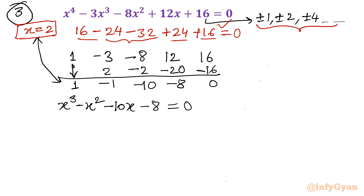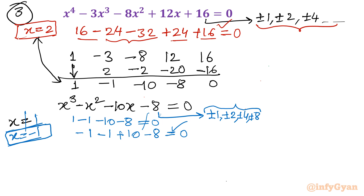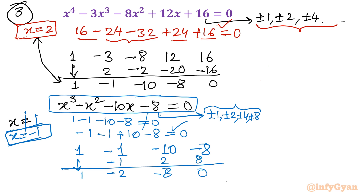I will apply the rational root theorem again to the cubic, testing factors of 8. Testing x equals 1 does not give 0, so next I try x equals negative 1: (negative 1) cubed minus (negative 1) squared minus 10(negative 1) minus 8 equals negative 1 minus 1 plus 10 minus 8 equals 0. Yes, x equals negative 1 is a root. Performing synthetic division on 1, negative 1, negative 10, negative 8 with divisor x equals negative 1 yields coefficients 1, negative 2, negative 8 with remainder 0. So the resulting quadratic is x squared minus 2x minus 8 equals 0.